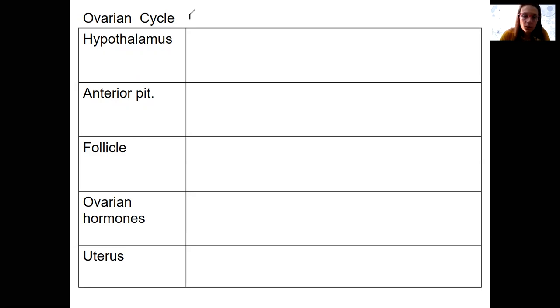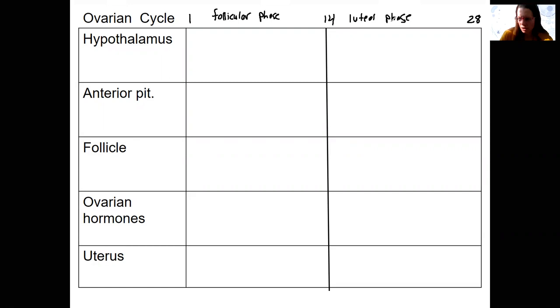So the ovarian cycle, as you may know, in humans is 28 days. I'm going to write in three key numbers of days that we need to talk about. I'm going to mark ovulation right here at day 14. The first 14 days is going to be called the follicular phase. That's when follicle development occurs, the folliculogenesis we just talked about. The second 14 days are called the luteal phase. This is when the corpus luteum is around. So these phases are based on the stage of the follicles in the ovary, the ones that are maturing.